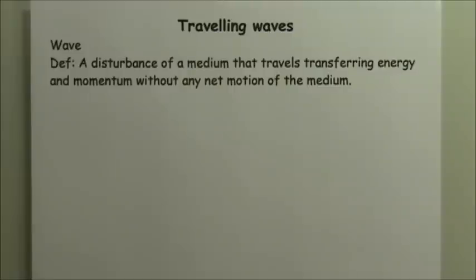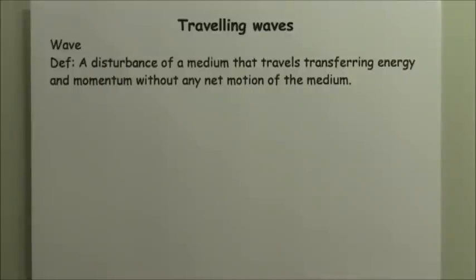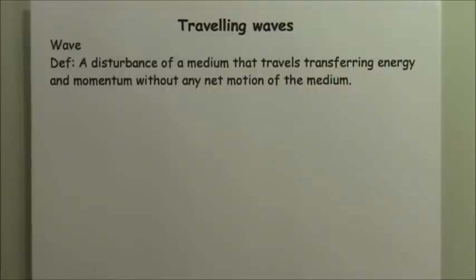A wave is a very intangible thing — it's not the medium, not the string, the slinky, or the water. Those are the medium, but the wave is the disturbance of the medium. It's not the atoms themselves, but the way those atoms are behaving. When they become disturbed, the disturbance begins to travel through the medium.